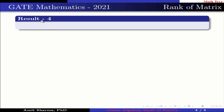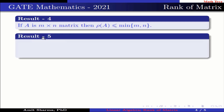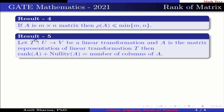Result number 4: if A is an M×N matrix, then rank of A is less than or equal to minimum of M and N. Result number 5: let T from U to V be a linear transformation and A is the matrix representation of T. Then rank of A plus nullity of A equals the number of columns of A.